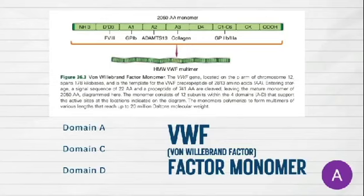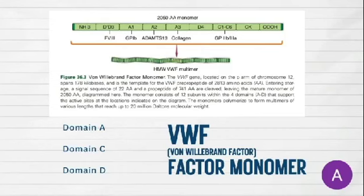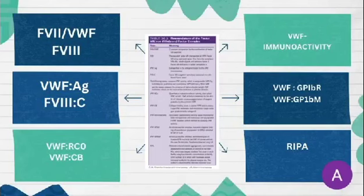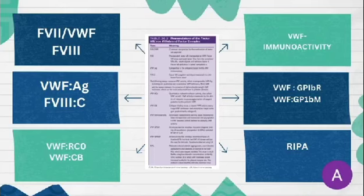Domain A supports the receptor glycoprotein GP1b. Domain C provides the site that binds platelet receptor GP2b3a. Domain D provides the carrier site for factor 8. Von Willebrand factor protects factor 8 from proteolysis. Upon release from intracellular stores, a percentage of von Willebrand factor multimers complex with factor 8, prolonging its plasma half-life from a few minutes when free to 8 to 12 hours when bound to von Willebrand factor.